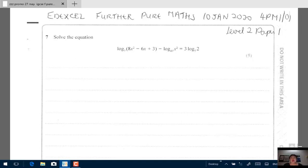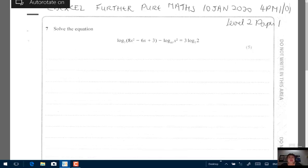So this is question number 7. It says solve the equation. So you have a logarithmic equation. Log to base 7 of 8x squared minus 6x plus 3 minus log of x squared to base 49. So what you can see is immediately people, the base terms are different. This is base 7 base 49.